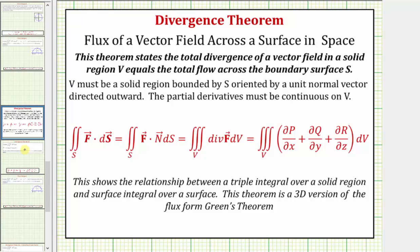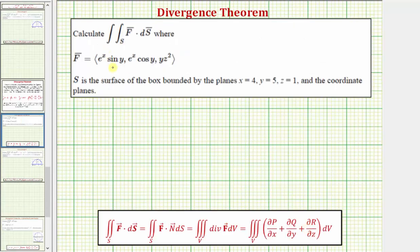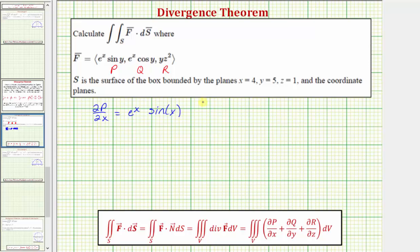Going back to our example and looking at our formula, in the vector field F: P equals e^x sine Y, Q equals e^x cosine Y, and R equals YZ squared. Let's find our partial derivatives. The partial derivative of P with respect to X is e^x sine Y. The partial derivative of Q with respect to Y is the derivative of e^x cosine Y with respect to Y, which is e^x times negative sine Y, or negative e^x sine Y. And the partial of R with respect to Z is the derivative of YZ squared with respect to Z, which is 2YZ.